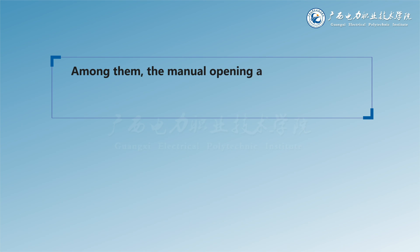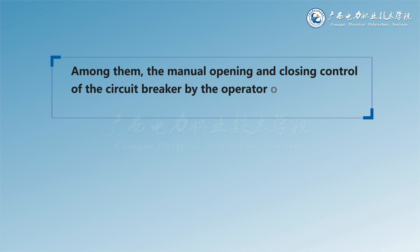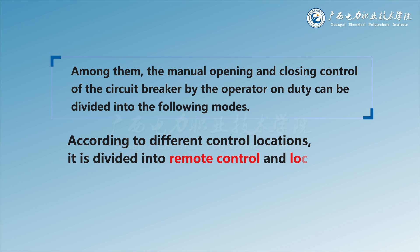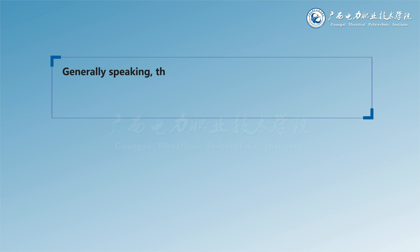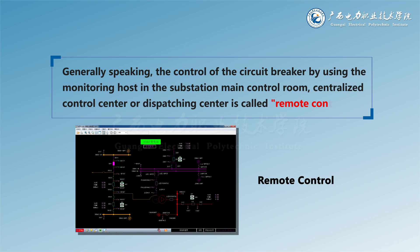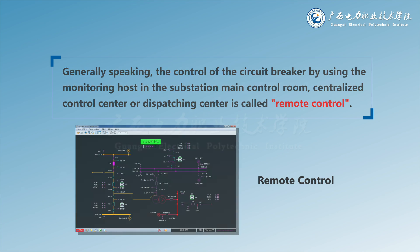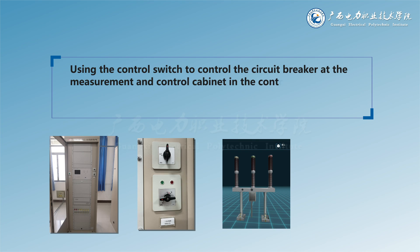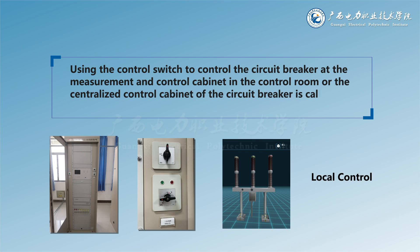The manual opening and closing control of the circuit breaker by the operator on duty can be divided into the following modes. According to different control locations, it is divided into remote control and local control. Generally speaking, the control of the circuit breaker by using the monitoring host in the substation main control room, centralized control center or dispatching center is called remote control. Using the control switch at the measurement and control cabinet in the control room or the centralized control cabinet of the circuit breaker is called local control.